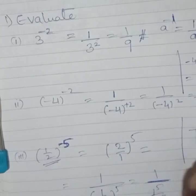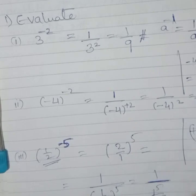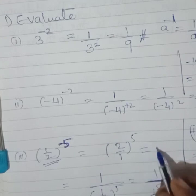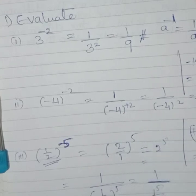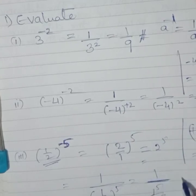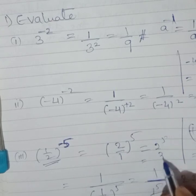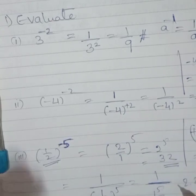I will show you one more. For example, minus 2 by 3, or whatever it is, raised to minus 5. You can write this as 3 upon 2 raised to plus 5. So, 2 raised to 5 — write the value. 2 raised to plus 5 means multiplying 2 five times: 2, 4, 8, 16, 32 upon 1, which is 32.